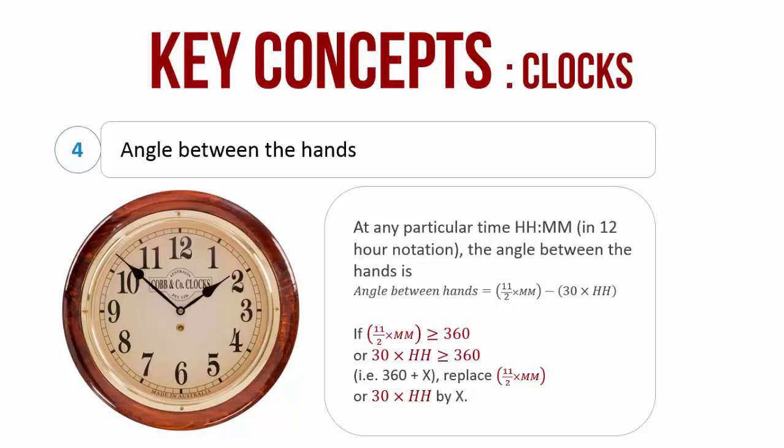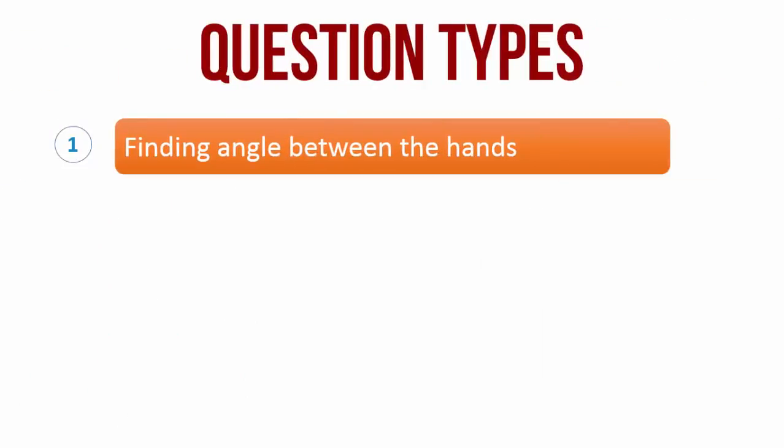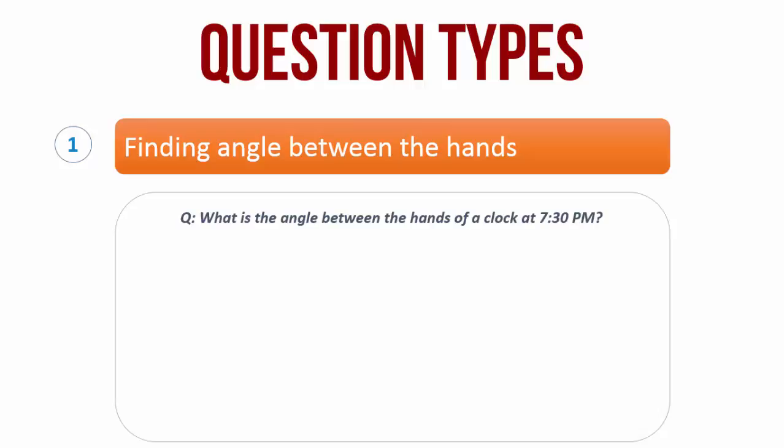There are two main types of questions that can be asked on clocks. The first question type is where you are asked to find the angle between the hour hand and the minute hand. That is, in the question you will be given a time and you will be asked to find the angle between the two hands at that particular time. For instance, look at this question. What is the angle between the hands of a clock at 7:30 PM?